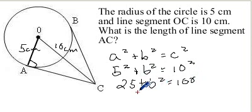So subtracting 25 from both sides, we've got B squared equals 75.